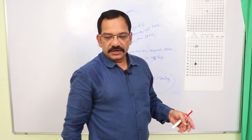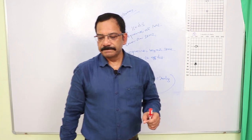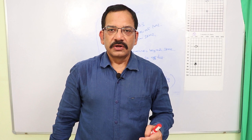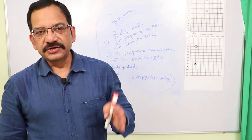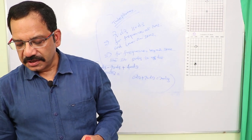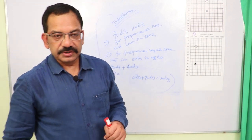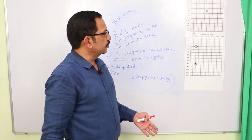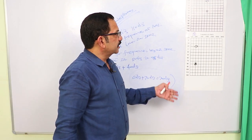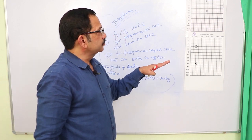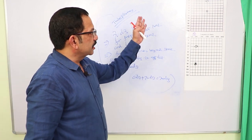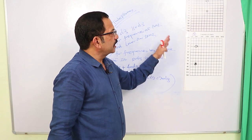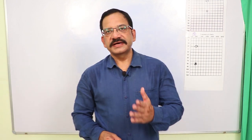Therefore, in contemporary times, if you are purchasing an audiometer, look for tube phones facility so that if you are confronted with such audiograms, you can carry out masking. Otherwise, with headphones and this sort of audiograms, carrying out masking is impossible.